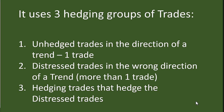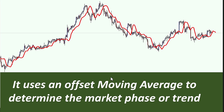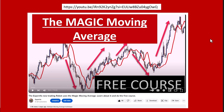The EA uses an offset moving average to determine market phases and trends. The offset moving average is very good at capturing nice trends — anything above the moving average is in a buy trend, anything below is in a sell trend. This is what makes the EA quite powerful. There's also a video about the magic moving average, made about six days ago — the clickable link will be in the description and the first comment. Please go watch it as it explains exactly the benefits of using this magic moving average.